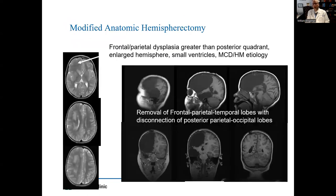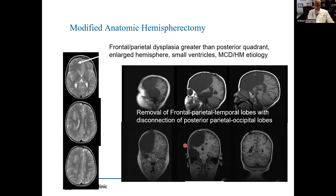In a patient with hemimegalencephaly and an enlarged right hemisphere, maybe the frontal and parietal lobe is more affected than the occipital and temporal lobes. You can tailor the operation to remove the most abnormal portions of the hemisphere and disconnect the less affected portions, which may help reduce the incidence of hydrocephalus after surgery.